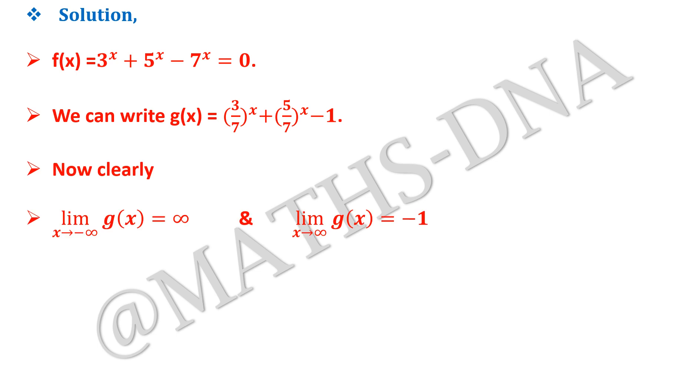limit x tends to minus infinity g of x is equal to infinity, and limit x tends to infinity g of x is equal to minus 1.